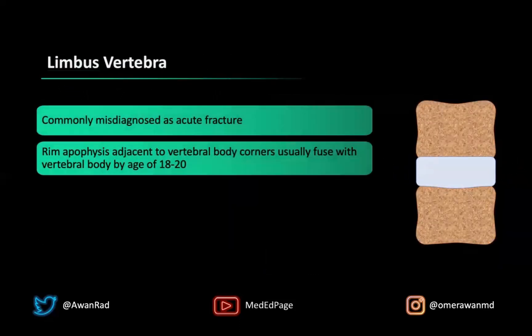What is a limbus vertebrae? This is important because it can commonly be misdiagnosed as an acute fracture. To understand it, we have to understand normal anatomy and development. Normally, there is a ring or rim apophysis — an ossification center that occurs along the anterior superior and anterior inferior vertebral body, separate from the vertebral body, but which fuses with it by age 18 or 20.